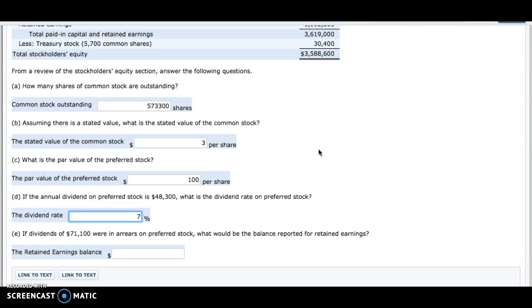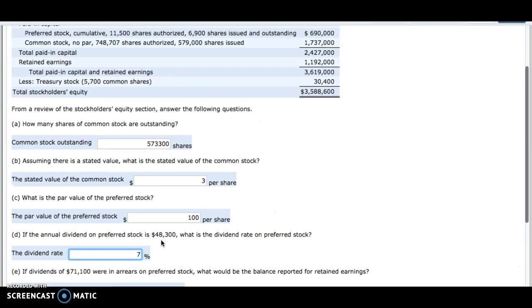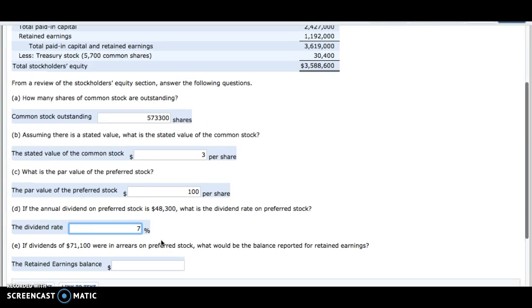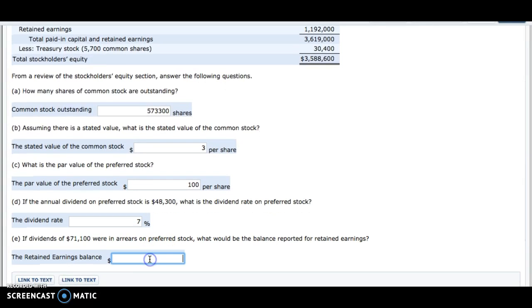But what I understand is that unless dividends have been formally declared by the board of directors, they are not considered a liability to the corporation and therefore are not on the books anywhere. So since it doesn't say that these arrears have been declared, I would assume that the retained earnings amount does not change from what is stated up here, so that would be $1,192,000.